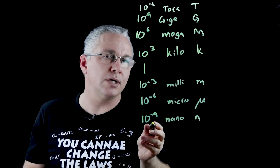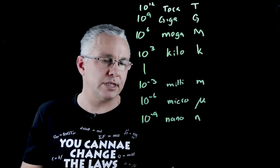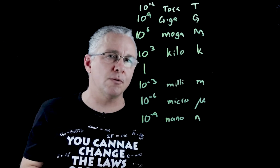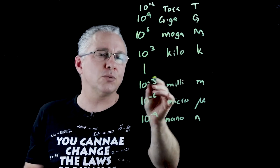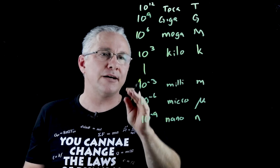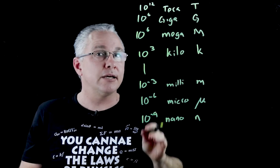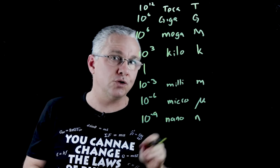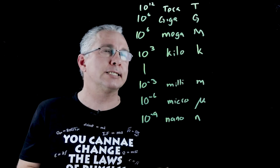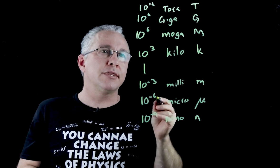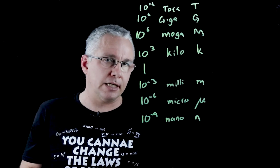I could go lower too: pico is 10 to the negative 12, and femto is 10 to the negative 15 — but these are the most common ones. Not all of them are 10 to the power of three. For example, deca is 10 to the power of 1, deci is 10 to the negative 1, centi is 10 to the negative 2, and hecto is 10 to the 2. But again, these are the most common ones, and these symbols represent these particular powers.